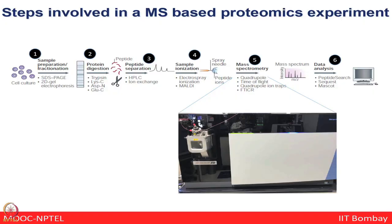Then comes how to best separate these ions based on mass-to-charge ratios, where the latest technology like Orbitrap Fusion can be very helpful. We have already talked about MALDI-TOF-TOF and QTOF hybrid configurations, but Orbitrap Fusion is known as a tribrid technology where you can use any of those configurations — quadrupole, time of flight, or Orbitraps.